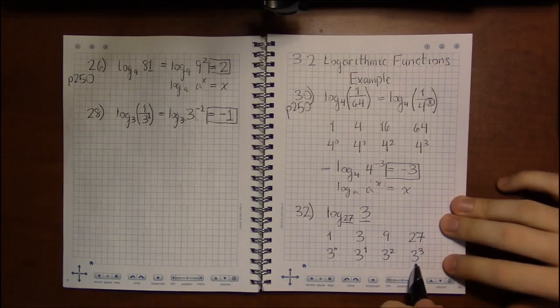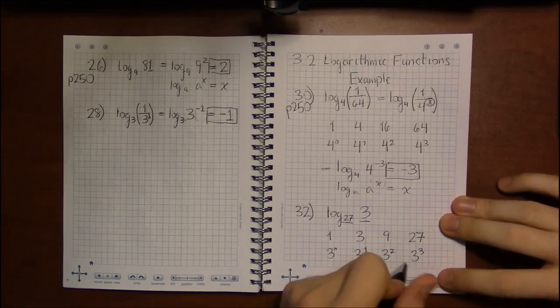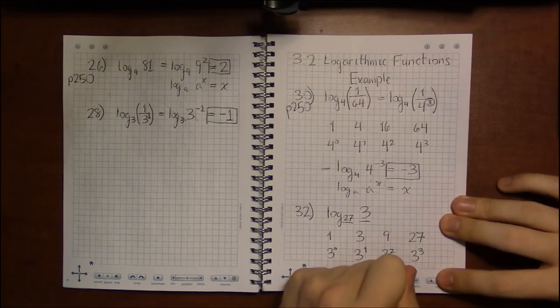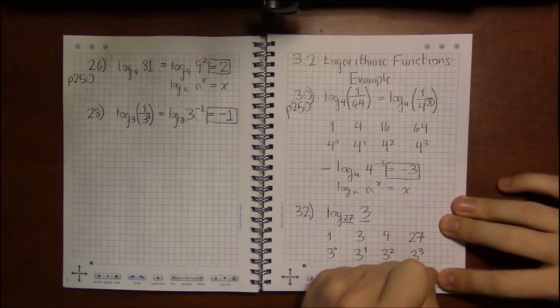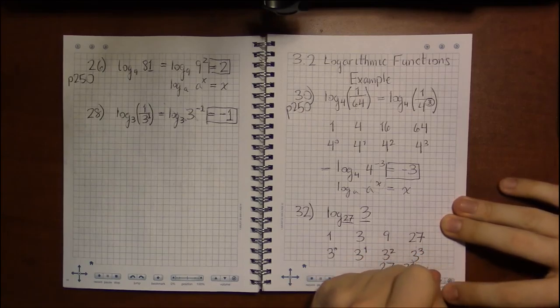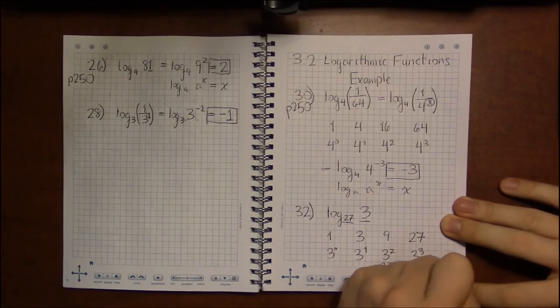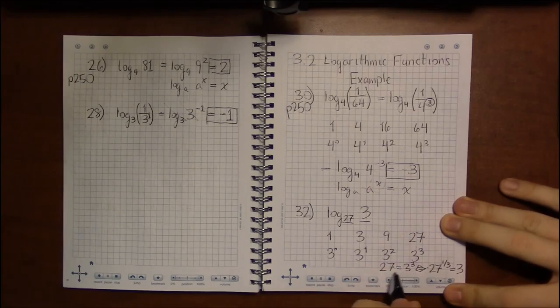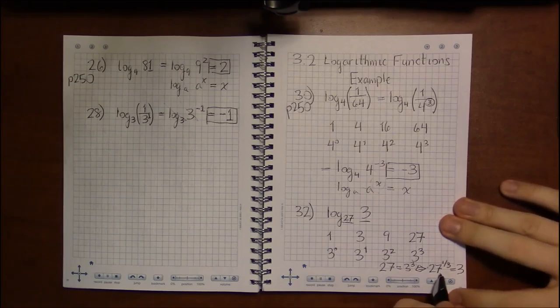27 is 3 cubed. So if 27 is 3 cubed, that means 27 to the 1 third power is 3. Taking both sides to the 1 third power, or taking cube roots if you will, of both sides, gets me this nice relationship.